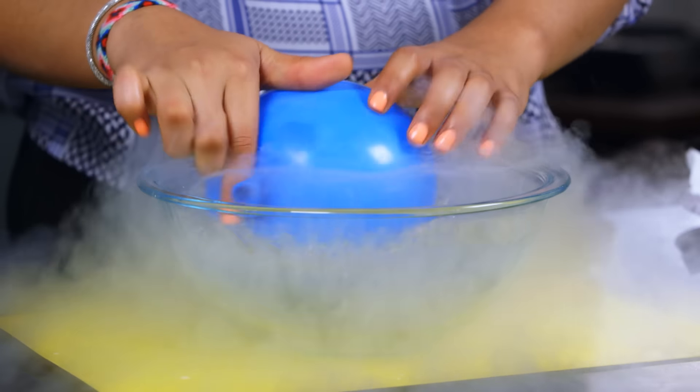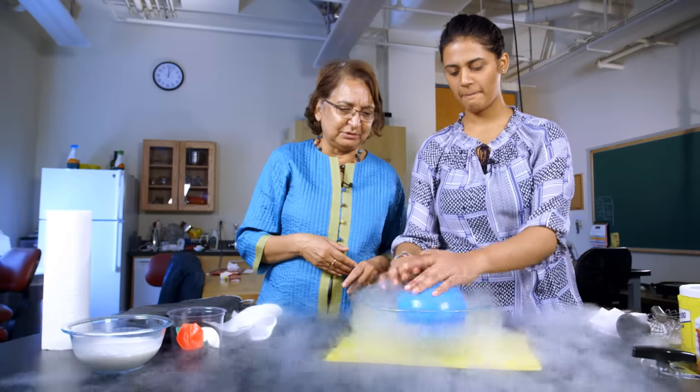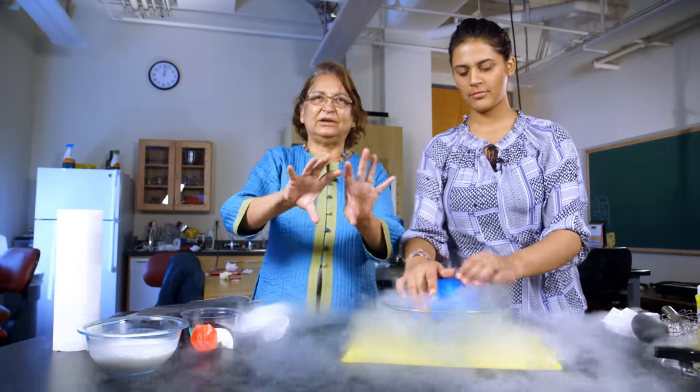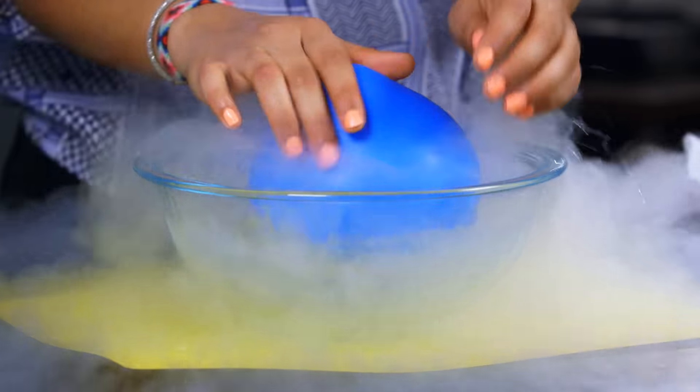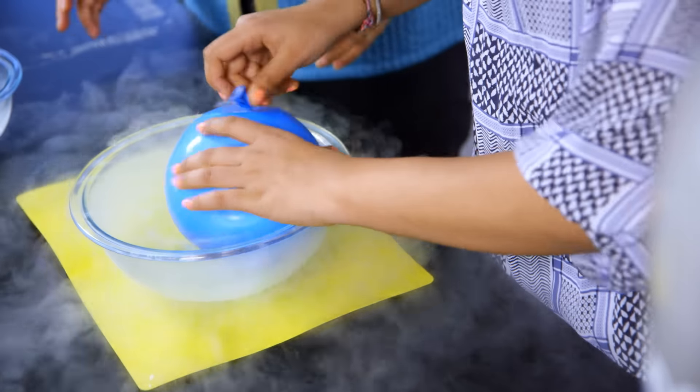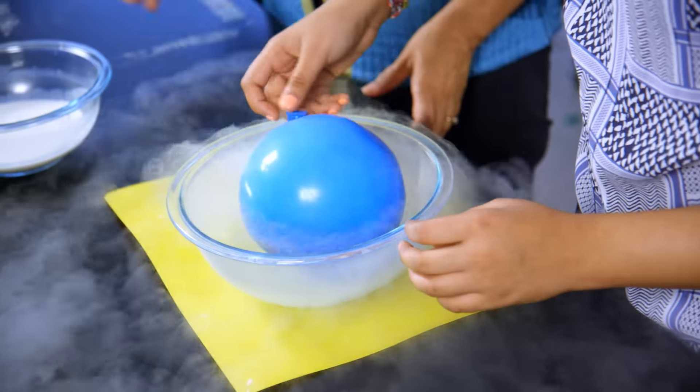Now we're just going to rotate. So the rotation, what it does is the liquid that's inside the balloon, because she's spinning it, spreads to the outer surface of the balloon. And since the outer surface of the balloon is very cold, it immediately freezes.